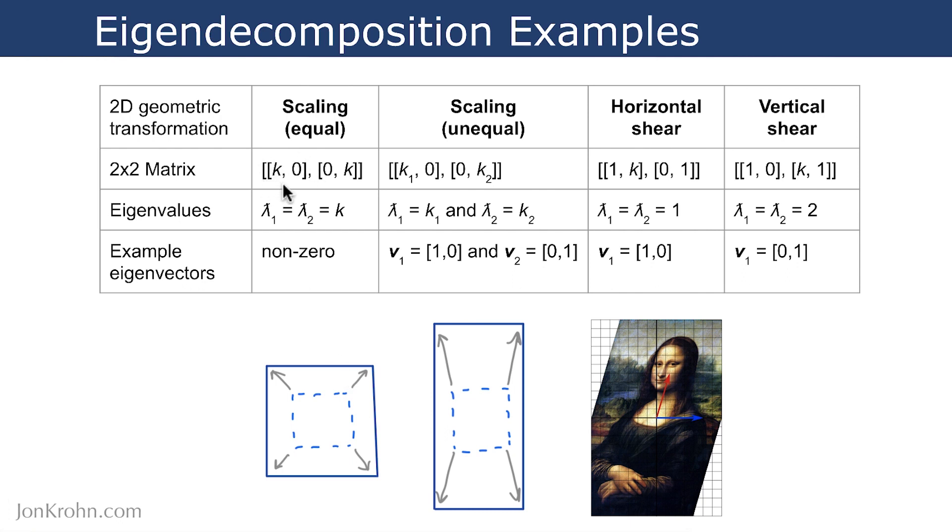then you use a matrix like this. I'm using the NumPy or PyTorch or TensorFlow double square bracket notation to annotate this 2x2 matrix here. And so we have k's along the main diagonal in the top left corner and in the bottom right corner of the 2x2 matrix.